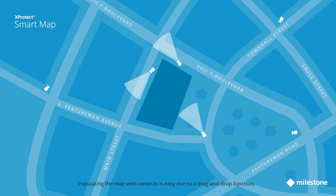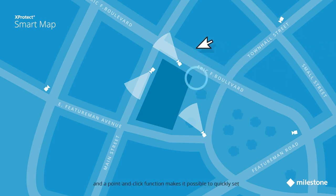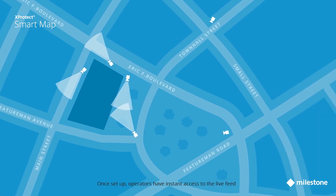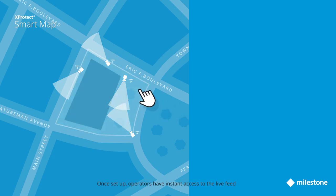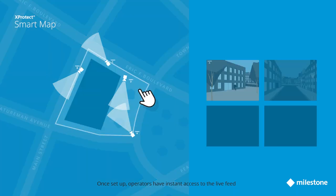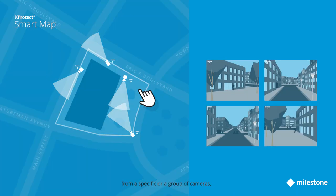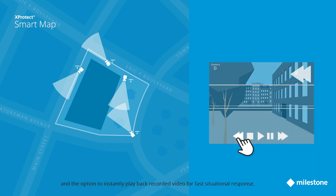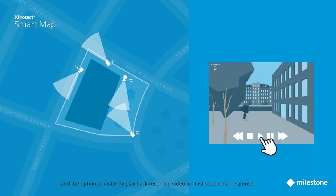Populating the map with cameras is easy due to a drag-and-drop function, and a point-and-click function makes it possible to quickly set the direction of the cameras and their view coverage. Once set up, operators have instant access to the live feed from a specific or a group of cameras, and the option to instantly playback recorded video for fast situational response.